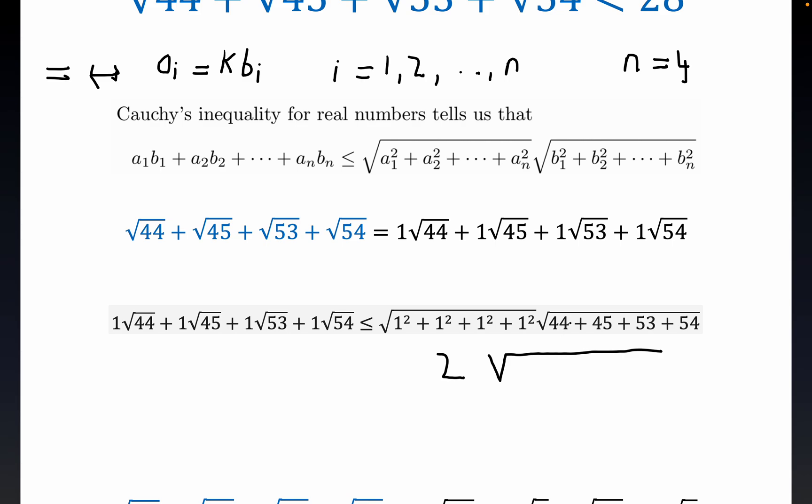Now I believe this sums up to 196. So this is equal to, what is that? 14, 2 times 14, 2 times 14 equals 28. And so it's QED time. We've proved it.